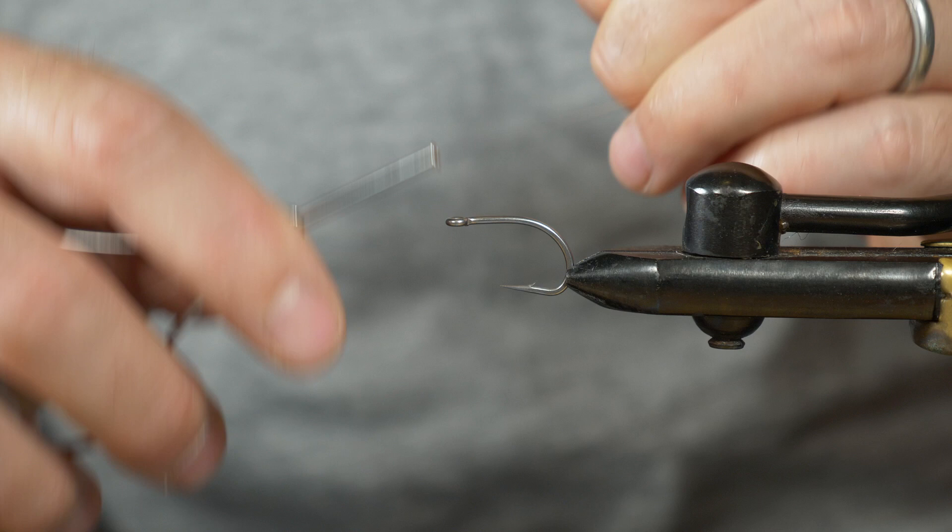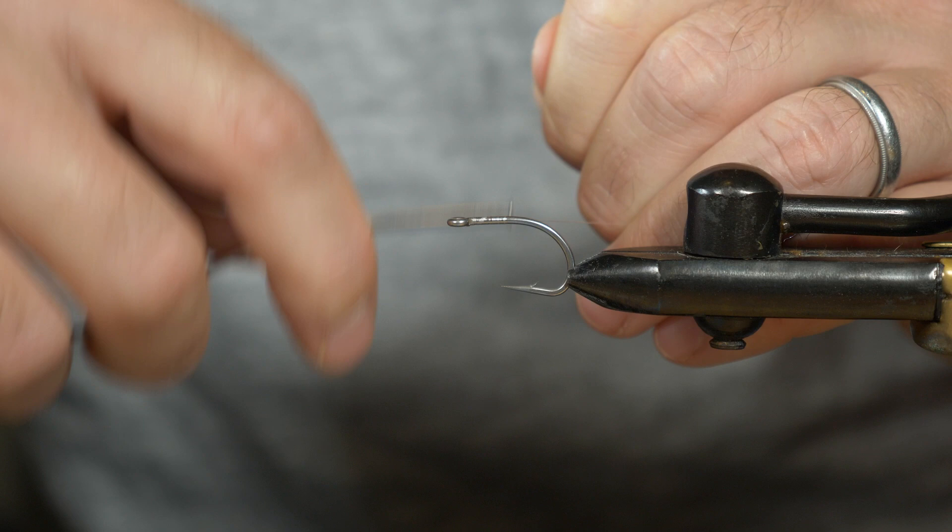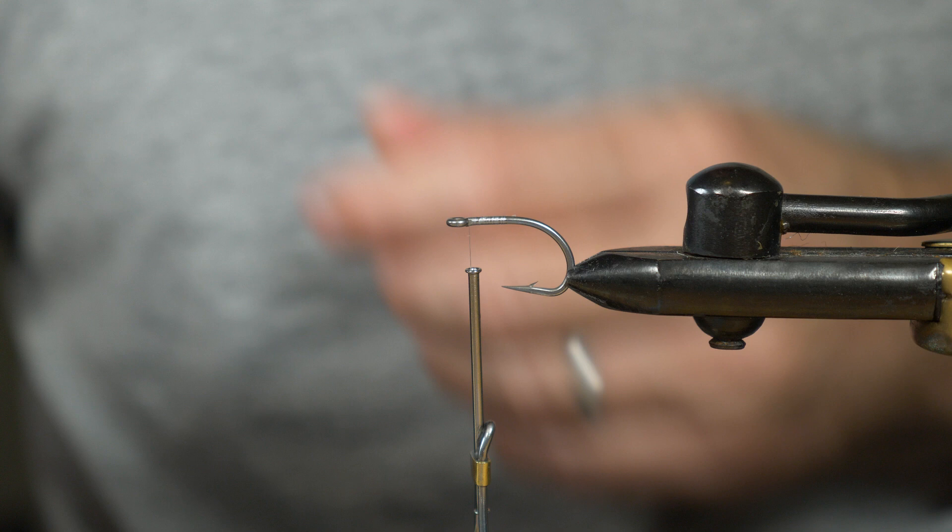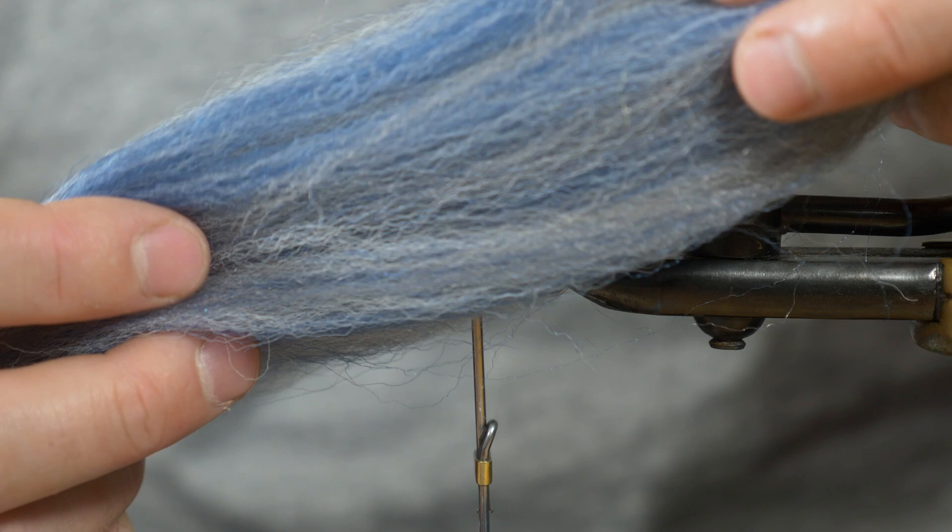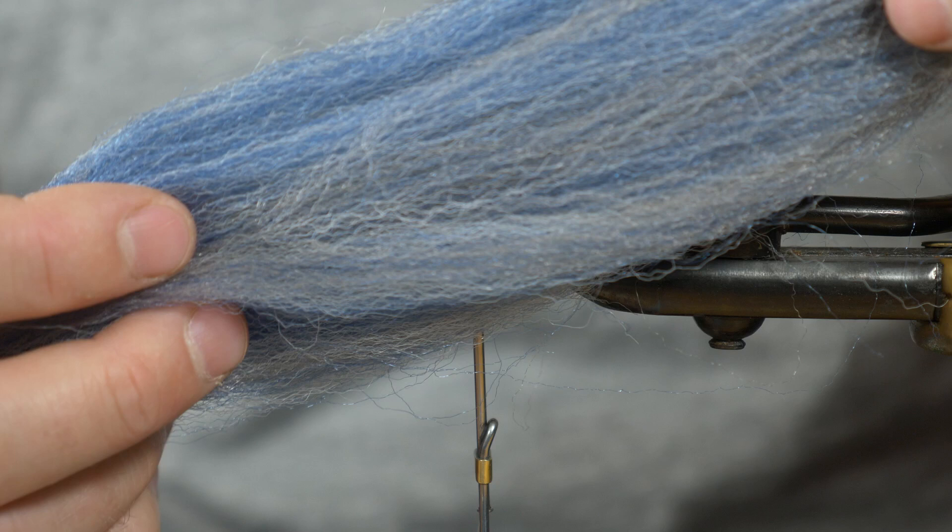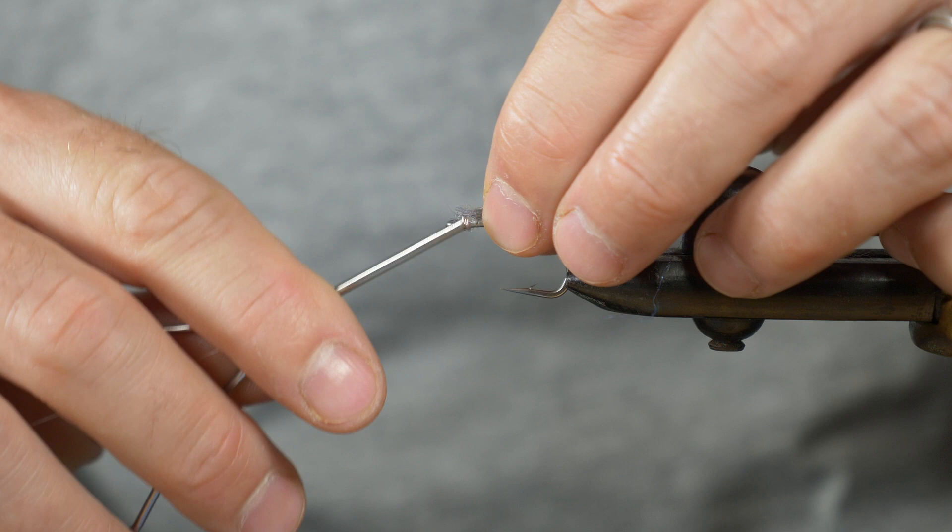With the hook in the vise, I'm just going to lay a small base of thread. Don't have to go very far back, just to give material something to bind onto. The first thing we've got to do is tie in our tail. This Dun Shad Congo Hair Baitfish Blend has got silver, blue, and gray in it. We're going to try and create a little bit of a layer with the grays on the bottom and the blue on top. But you want to keep this fly very sparse.